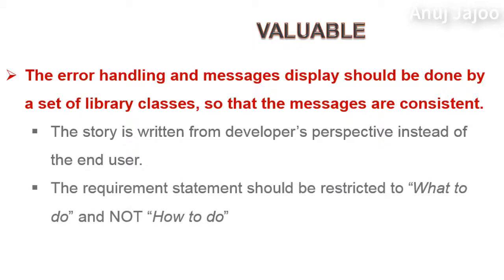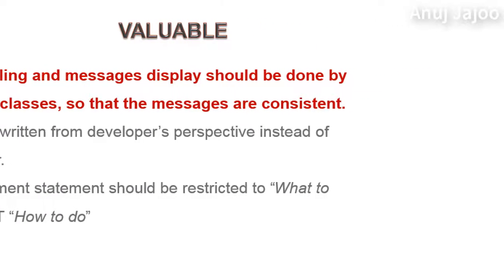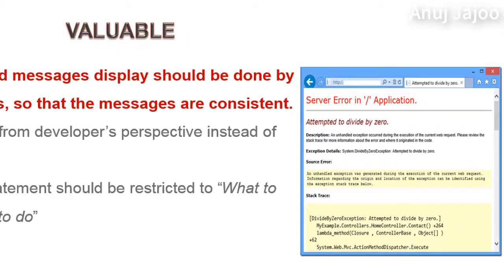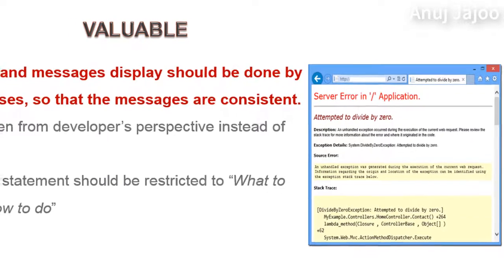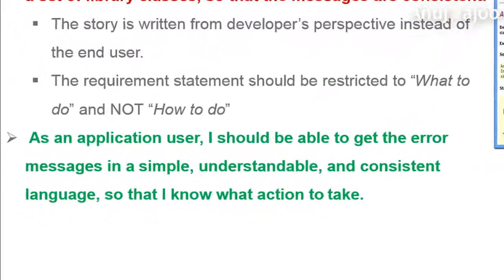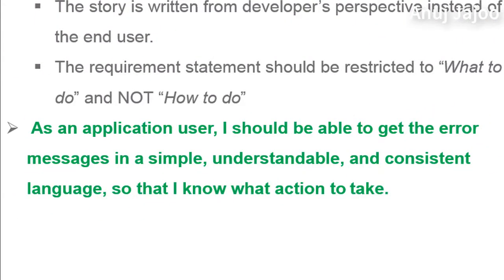The requirement statement should be restricted to what to do, not how to do it. Imagine visiting a bank website where the landing page shows some print stack trace kind of messages. Errors are inevitable — due to network problems or client machine issues. The problem is that the user feels lost after seeing the error messages and does not know what to do next. So let's revise the story: As an application user, I should be able to get error messages in simple, understandable, and consistent language so that I know what action to take. For example, instead of a print stack trace, the message could be: please delete the cookies from the browser settings and refresh the page.